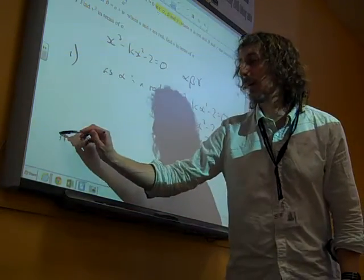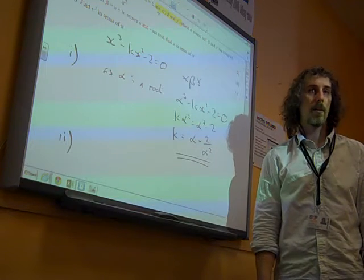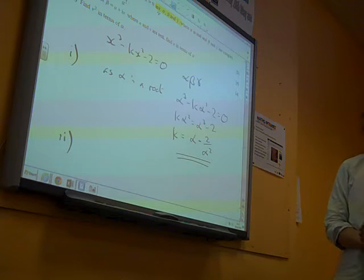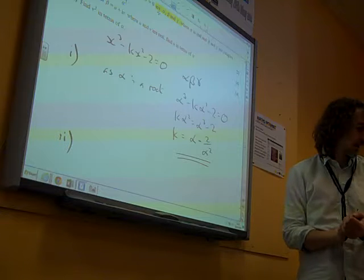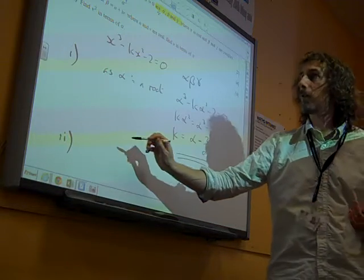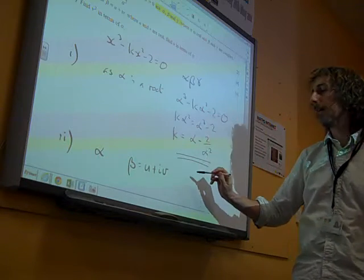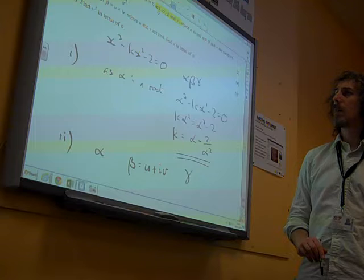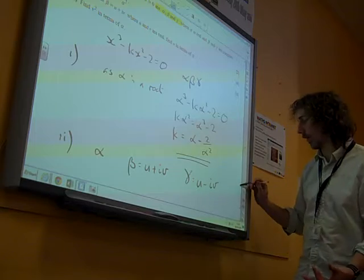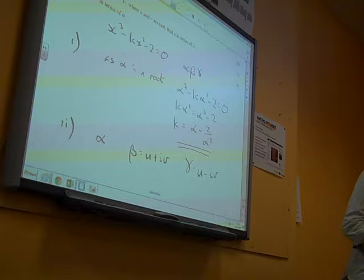So two marks really, just for knowing that alpha, beta and gamma fit the equation. Part 2. Given that beta is u plus iv, where u and v are real, find u in terms of alpha. So let's think about what we've got here. We've got alpha is one root, beta is u plus i times v. And therefore, gamma must be u minus iv, because it's all about complex conjugates. So knowing that u plus iv is one root, that must have been the other.